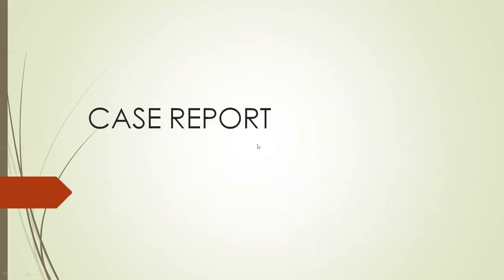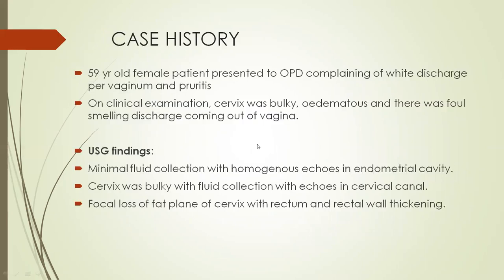Now we are discussing the case. A 59-year-old female patient presented to the gynecology OPD complaining of foul discharge per vaginum and pruritus. On clinical examination, the patient's cervix was bulky and edematous, with foul-smelling discharge coming out of the vagina. Ultrasound findings showed minimal fluid collection with homogeneous echos in the endometrial cavity. Cervix was bulky with fluid collection in the cervical canal. There was focal loss of fat plane between the cervix and rectum, with evidence of rectal wall thickening.